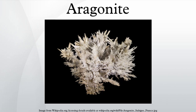The type location for aragonite is Molina de Aragón, 25 km from Aragon, for which it was named in 1797.